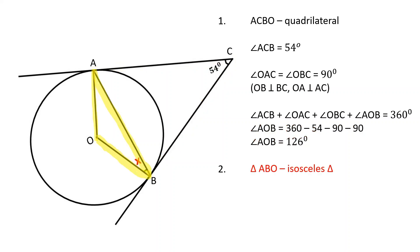Triangle AOB is an isosceles triangle because OA and OB are the radii of the same circle. The base angles of an isosceles triangle are equal. Therefore, angle OAB is equal to angle OBA.